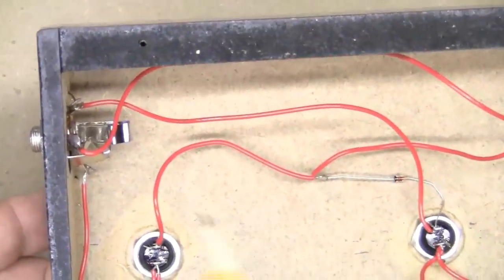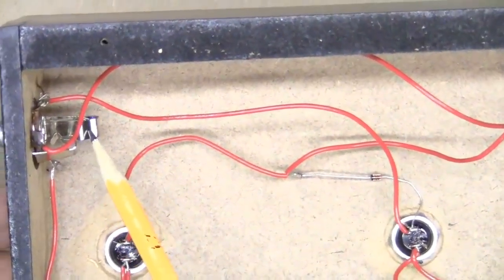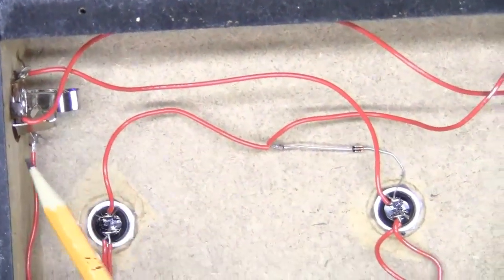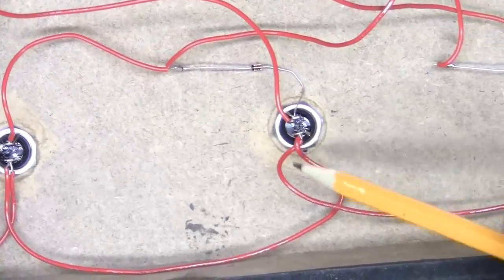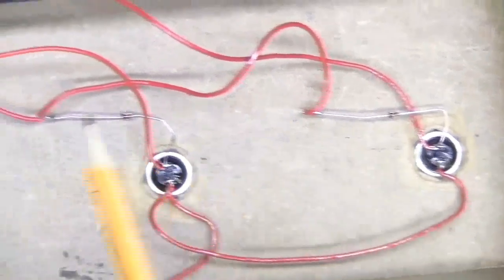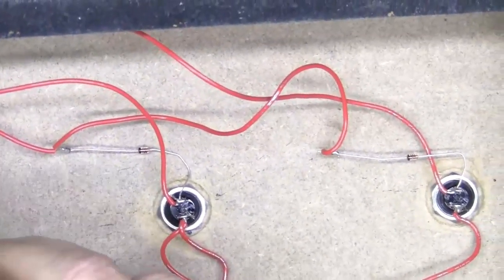Here we are. There's the TRS jack. We have a wire coming from the sleeve going to the three switches.